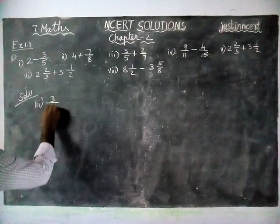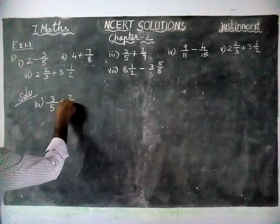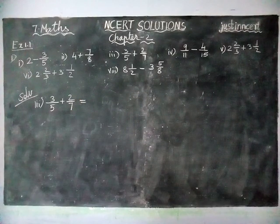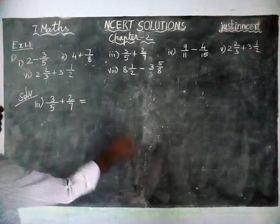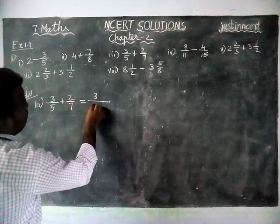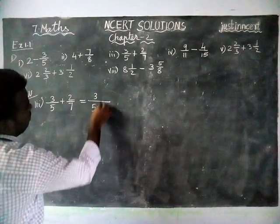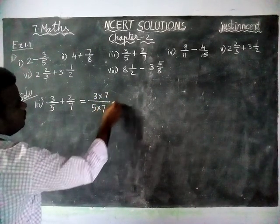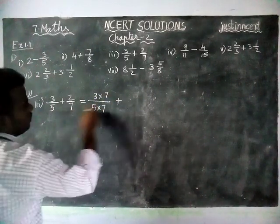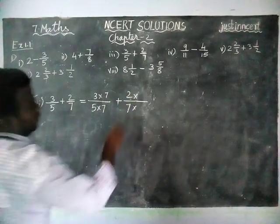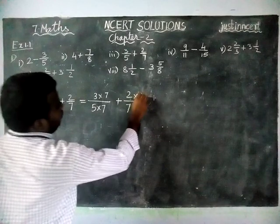3 by 5 plus 2 by 7 is equal to. Here both denominators are different. So we have to convert it into same denominator. So now 3 by 5, I am going to multiply this by 7 by 7.